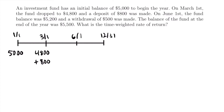Moving on to June 1st, we know that the fund balance is $5,200, and there is a withdrawal of $500 made on that date as well, so we write minus $500. Again, do not combine those values — this is the balance of the fund on June 1st before any deposits or withdrawals are made. Finally, we are told that the balance of the fund at the end of the year is $5,500, so for December 31st we write $5,500.